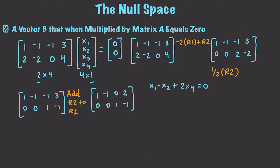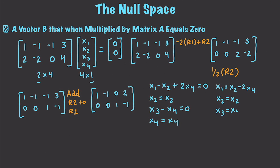I can convert to an equivalent system. This gives me x1 − x2 + 2x4 = 0. I can see that x2 = x2 (free variable), and x3 − x4 = 0, with the additional free variable x4 = x4. Solving for each variable: x1 = x2 − 2x4, x2 = x2, x3 = x4, and x4 = x4.